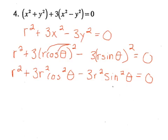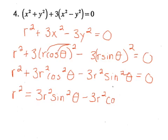And we'll leave this R squared over here. So we'll get R squared equals a positive 3R squared sine squared theta minus a 3R squared cosine squared theta.